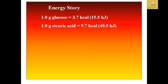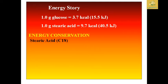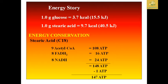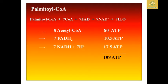One gram of glucose gives about 3.7 kcal and one gram of stearic acid gives 9.7 kcal. The energy conservation in stearic acid: 9 acetyl-CoA = 108 ATP, 8 FADH₂ = 16 ATP, and 8 NADH = 24 ATP, giving a total of 148 ATP. Subtracting 1 ATP used in activation gives a net of 147 ATP. Palmitic acid similarly yields 108 ATP.